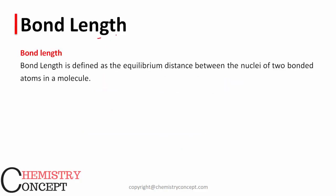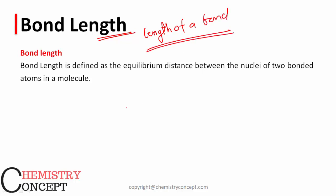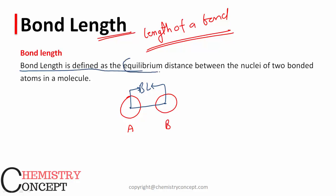First of all, bond length — as the name suggests, it is the length of a bond. If there are two atoms A and B forming a bond, then the distance between the centers of the nucleus of the two bonded atoms is called bond length. It includes whatever interatomic space is present. Bond length is defined as the equilibrium distance between the nucleus of the two bonded atoms in a molecule.